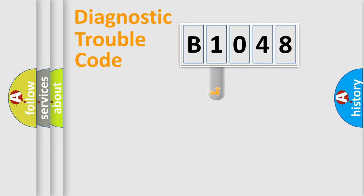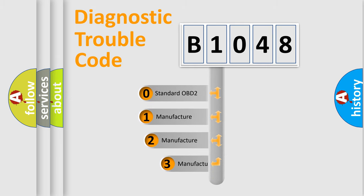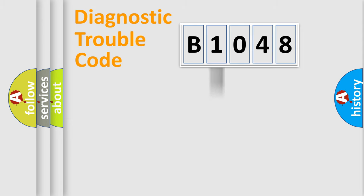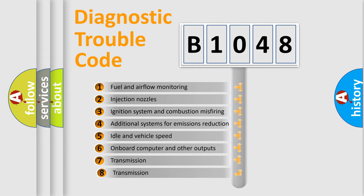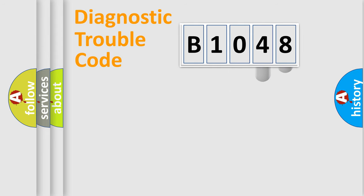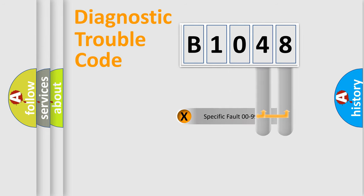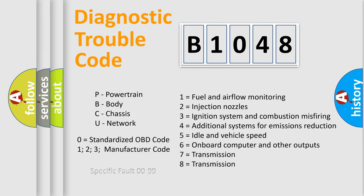This distribution is defined in the first character of the code. If the second character is expressed as zero, it is a standardized error. In the case of numbers 1, 2, or 3, it is a more specific expression of a car-specific error. The third character specifies a subset of errors, and only the last two characters define the specific fault of the group.